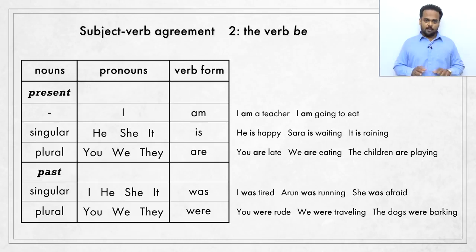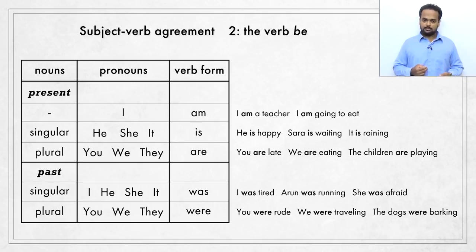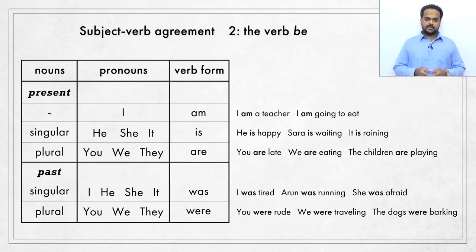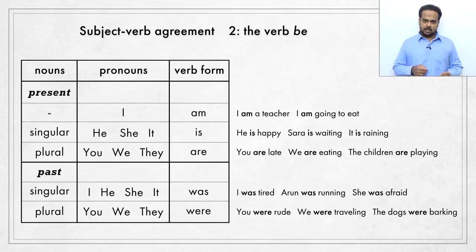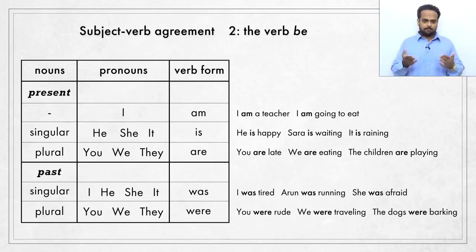In the past, the rules are different. For singular noun subjects and the pronouns I, he, she, and it, we use 'was': 'I was tired,' 'Arun was running,' 'She was afraid.' And for plural subjects and the pronouns you, we, and they, we use 'were': 'You were rude,' 'We were travelling,' 'The dogs were barking.' Some of these sentences use continuous verbs — am going, is waiting, is raining, are playing, was running, were travelling, were barking — in the present or past continuous tenses. But it is the form of the verb be that changes depending on the subject.